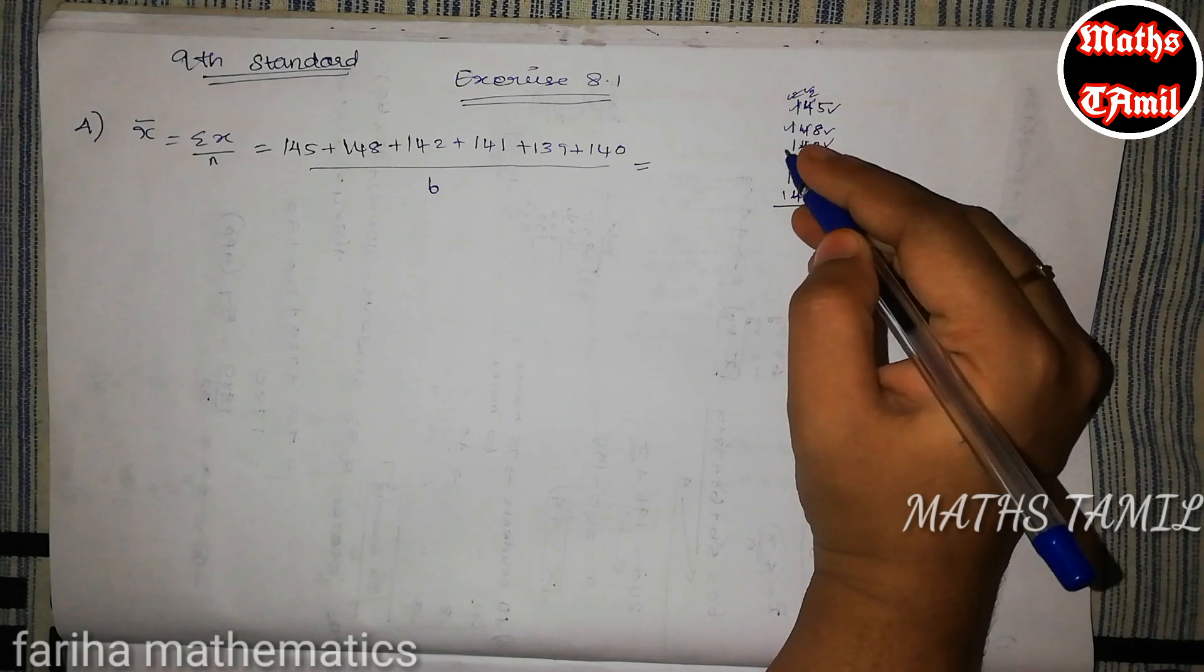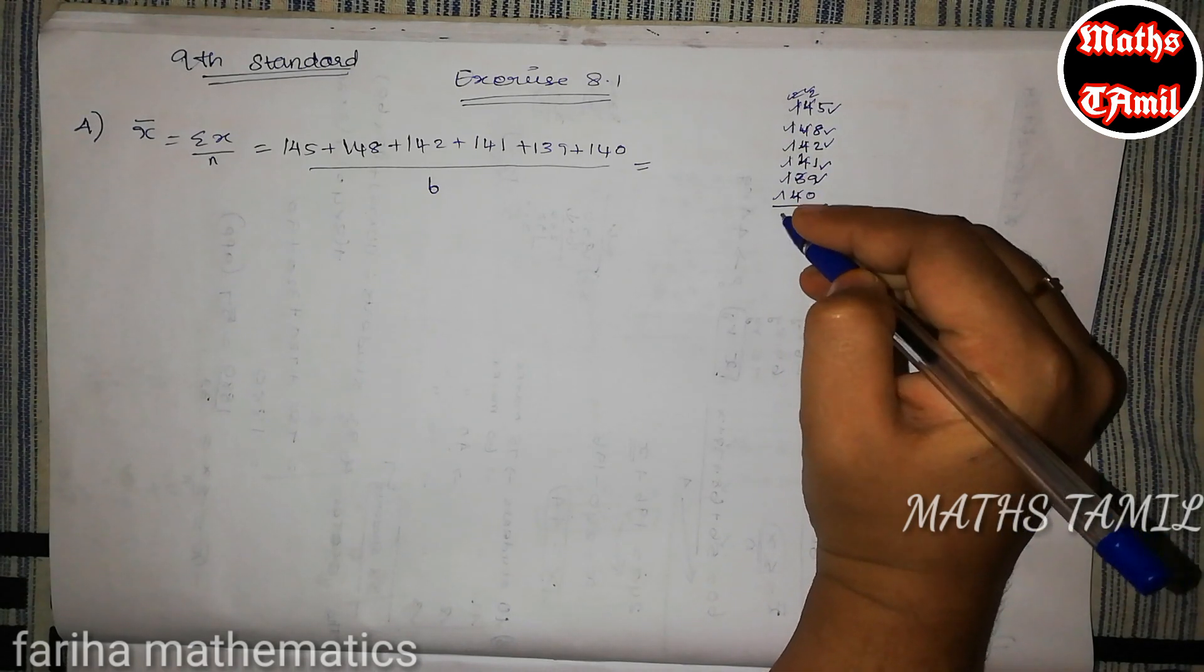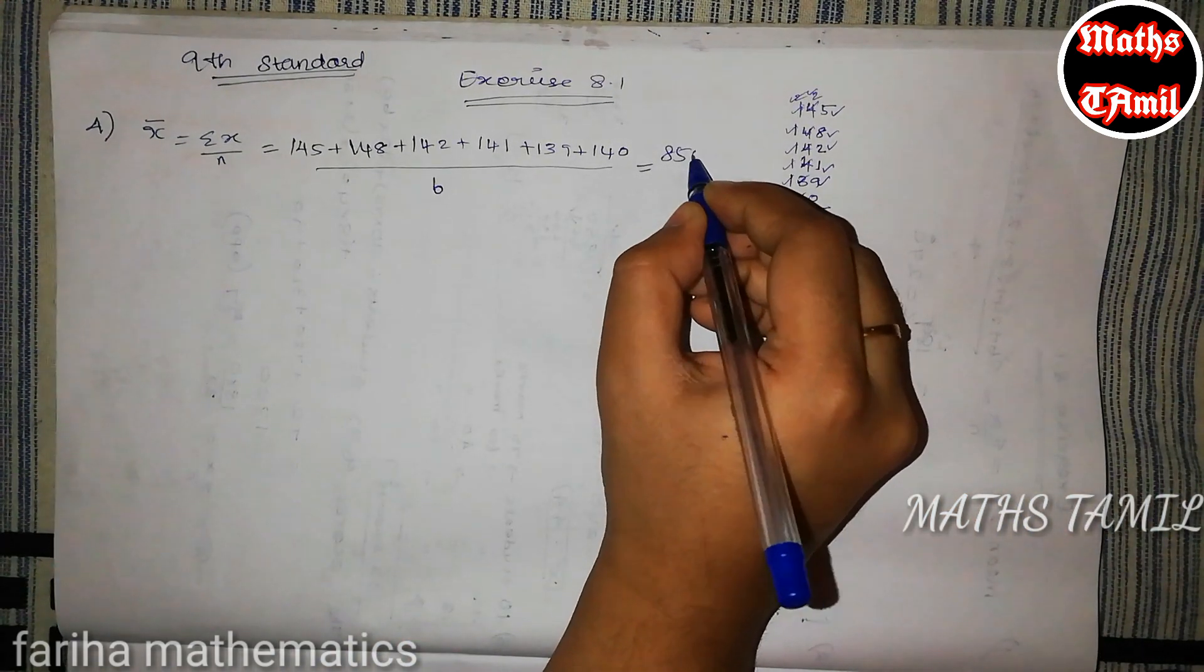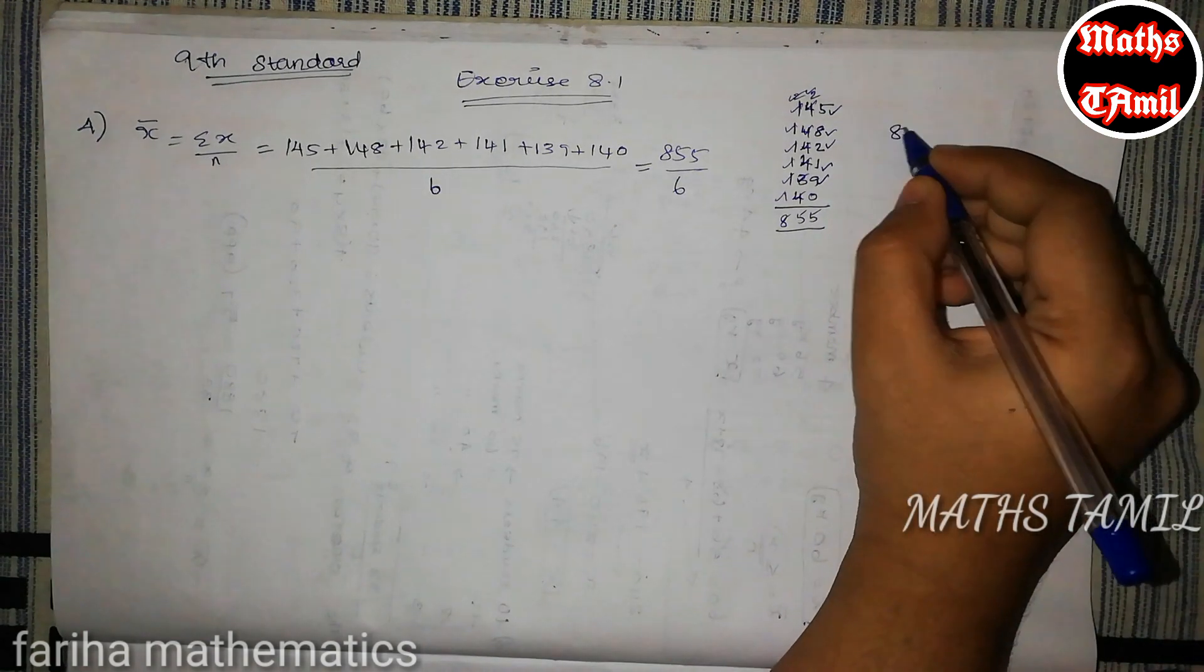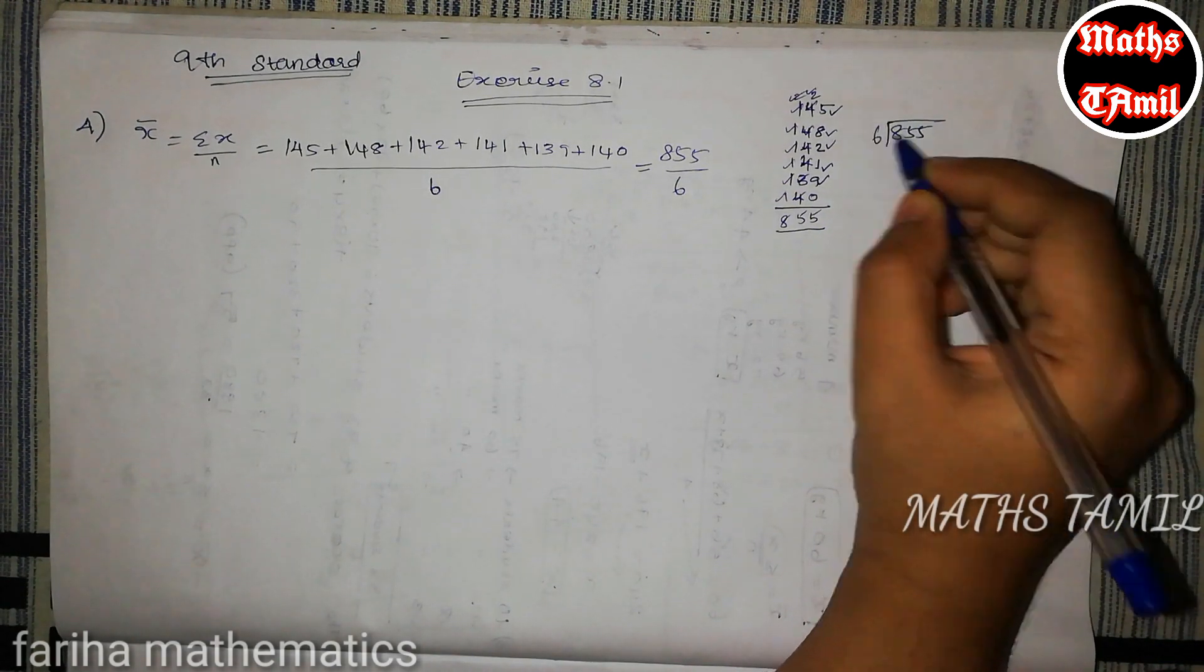So 3, 4, 5, 6, 7, 8. So 8, 55, so 855 divided by 6. So 855 is 6, so we divide by 6.